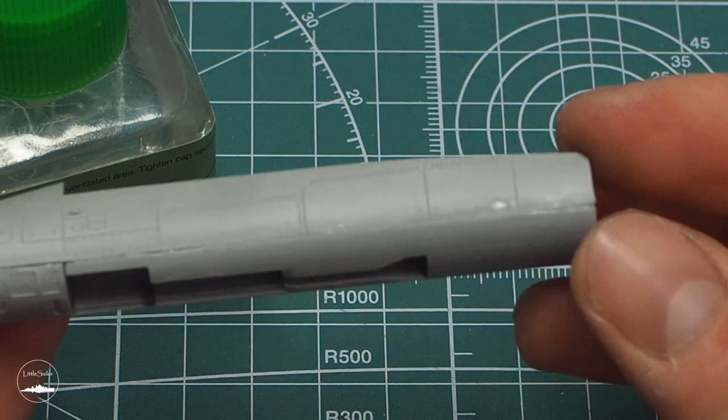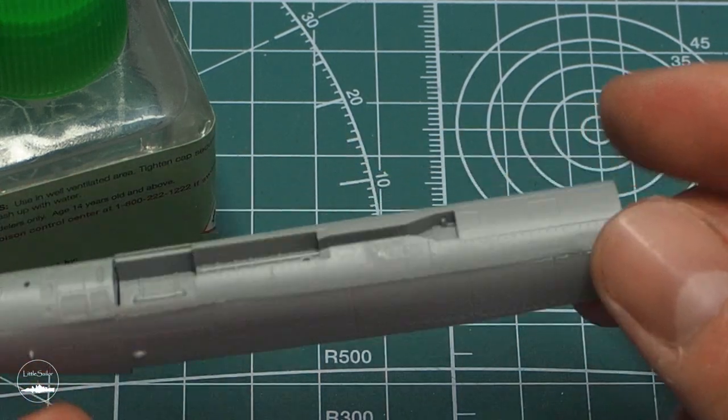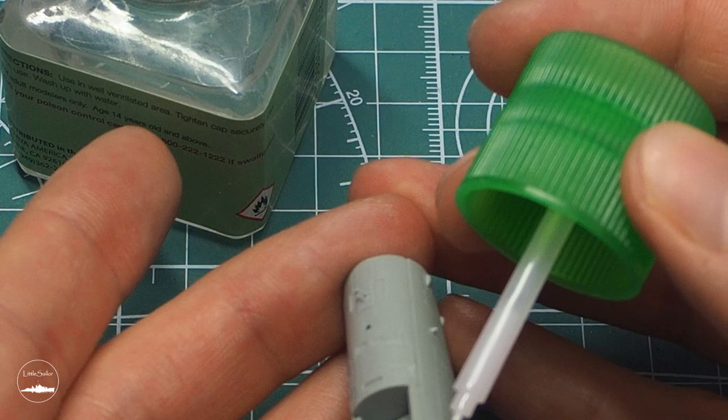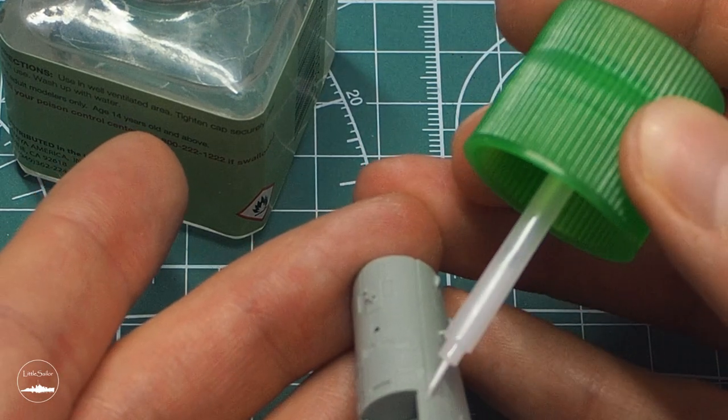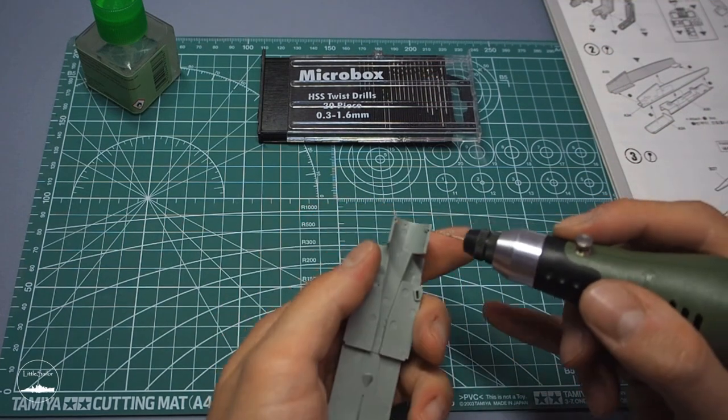As you can see, the matching of the elements is not perfect. I tried to eliminate some of these imperfections by applying extra thin glue. In some places I will definitely have to use putty. Comparing to my previous model from Tamiya, I have to admit that the Academy model is worse in this aspect.